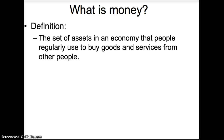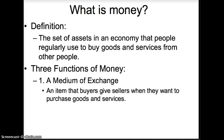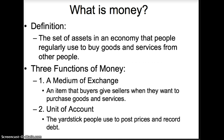As long as the asset we are looking at fulfills the three functions of money, an economist will consider it to meet the definition of money. The first function of money is medium of exchange — an item that buyers give sellers when they want to purchase goods and services. The second function is unit of account — a common yardstick people use to post prices and record debt. Since we all use dollars, we all know the value of a dollar and we are all on the same page.